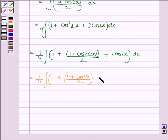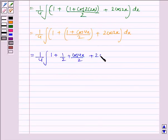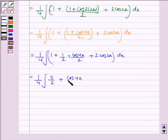This equals 1/4 times the integral of: 1 plus 1/2 plus cos4x/2 plus 2cos2x, dx.